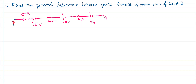In this problem we want to calculate the potential difference between the points P and Q, where P is here and Q is here, assuming this is part of a circuit. It is given in the problem that the direction of the current flow is like this, so you need not further worry about it.